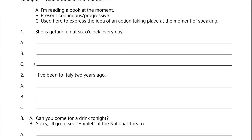The first one: 'She is getting up at six o'clock every day.' Corrected to: 'She gets up at six o'clock every day.' It is present simple, used here to describe a habit — something people do every day, the same in the past, present, and continuing into the future.